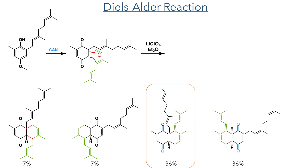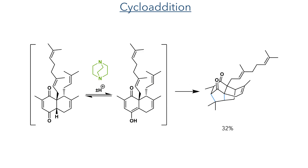The desired isomer was formed in a 36% yield and was taken forward to the next step, which was an intramolecular cyclization catalyzed by DABCO. The DABCO serves to promote the formation of the enol tautomer of the quinone and allow it to undergo a cyclization.